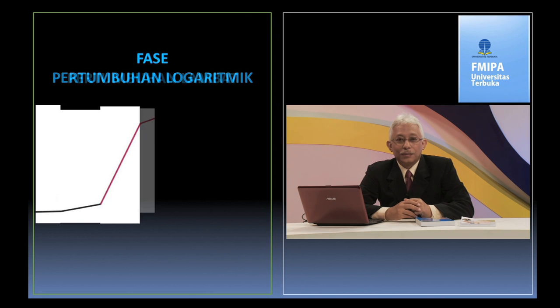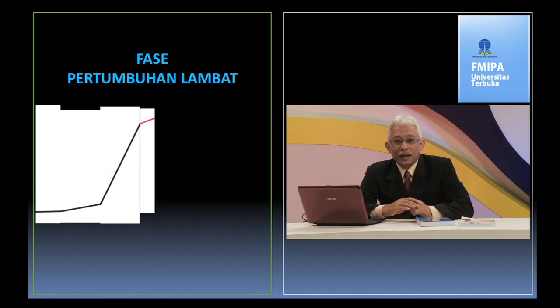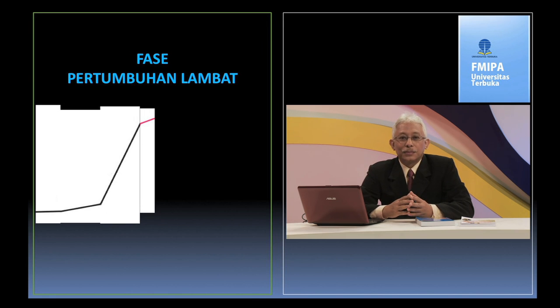Setelah mengalami fase logaritmik, pertumbuhan populasi sel mikroorganisme menjadi lambat. Penyebabnya antara lain: pertama, zat nutrisi di dalam medium sudah berkurang; kedua, adanya hasil-hasil metabolisme yang dikeluarkan oleh sel yang mungkin beracun atau menghambat pertumbuhan sel, misalnya asam sebagai hasil akhir dari proses fermentasi gula. Karena persediaan nutrien yang terbatas, pertumbuhan sel tidak stabil, yang berarti waktu generasi sel tidak konstan. Walaupun begitu, jumlah populasi sel pada fase ini masih tetap naik, meskipun kenaikan grafiknya tidak tajam, karena jumlah sel yang tumbuh masih lebih banyak daripada jumlah sel yang mati.